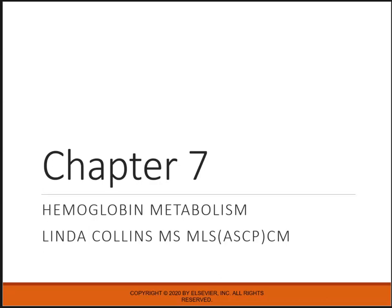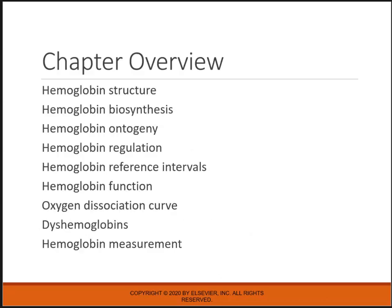Chapter 7, Hemoglobin Metabolism. We'll be going over the structure, how hemoglobin is made, how hemoglobin is made in utero, how we regulate and control hemoglobin production, what are the normal ranges or reference intervals, what hemoglobin actually does, what we call the oxygen dissociation curve, abnormal hemoglobins, and how we measure hemoglobin.